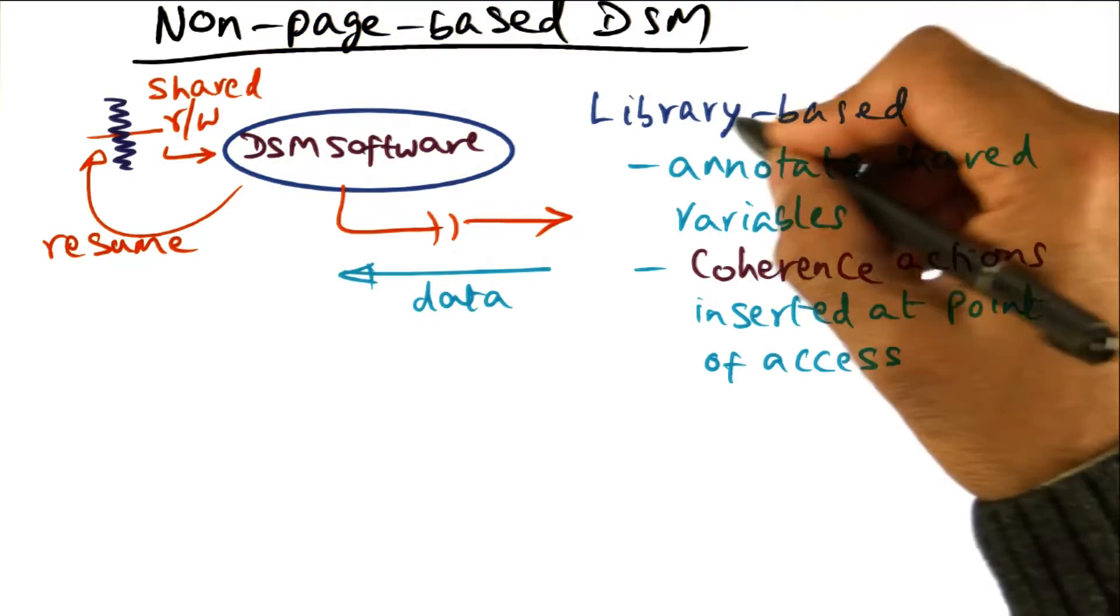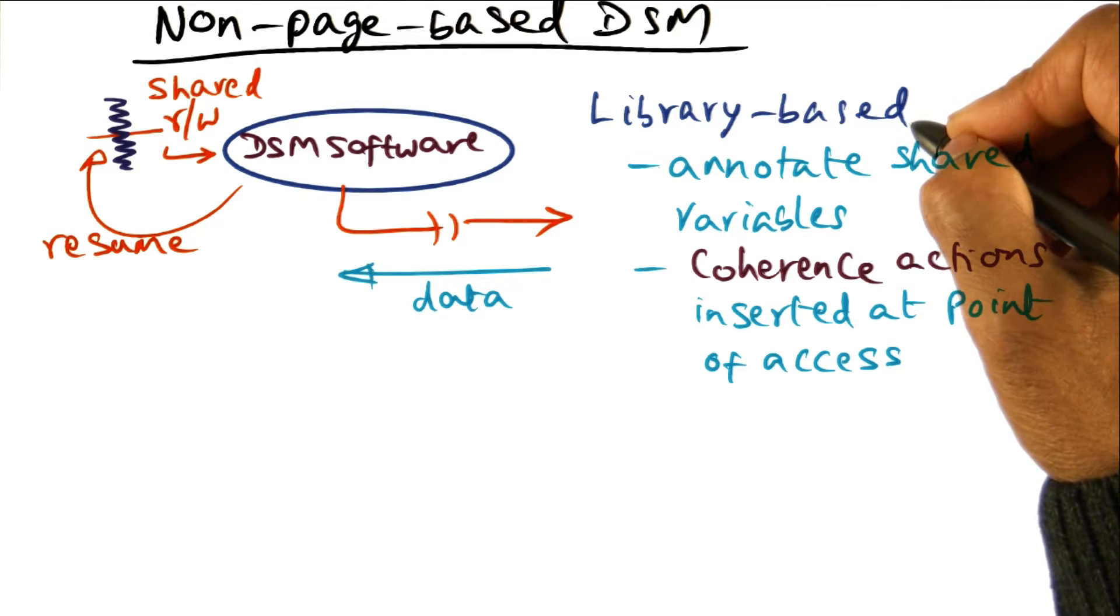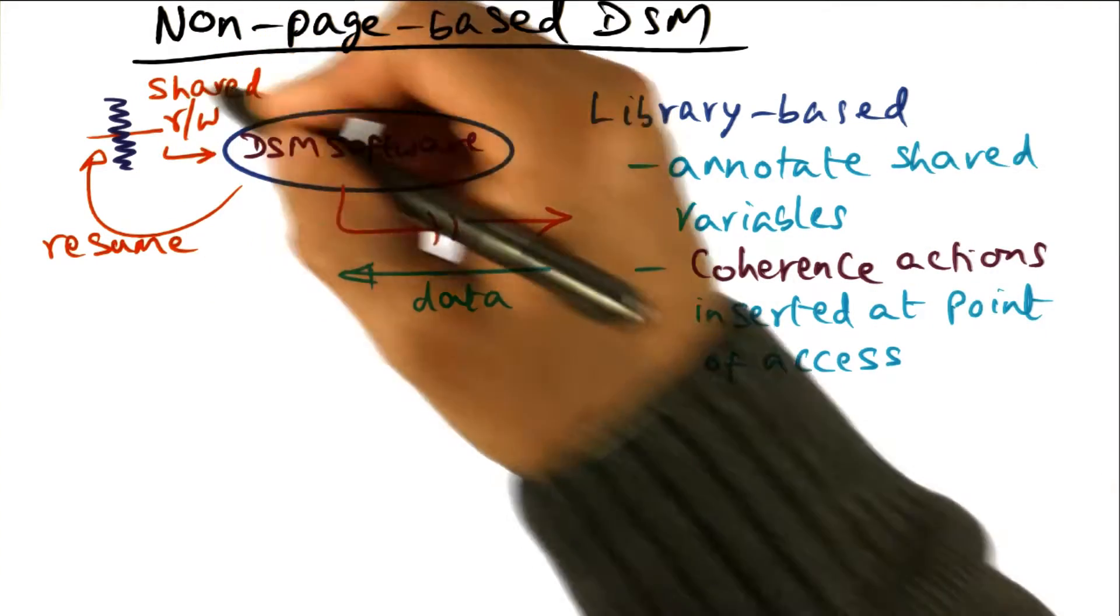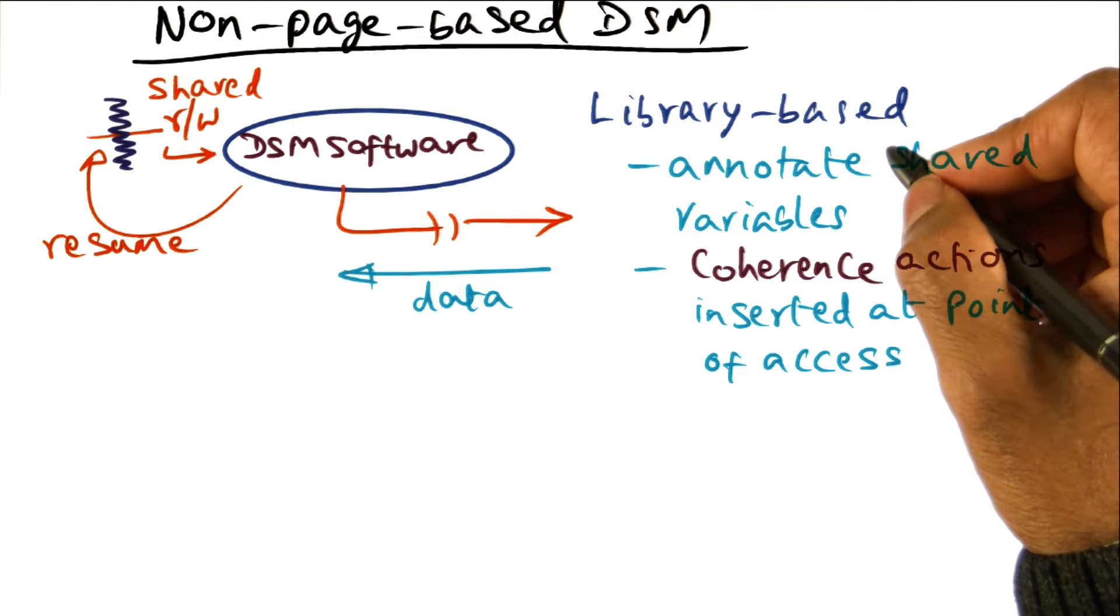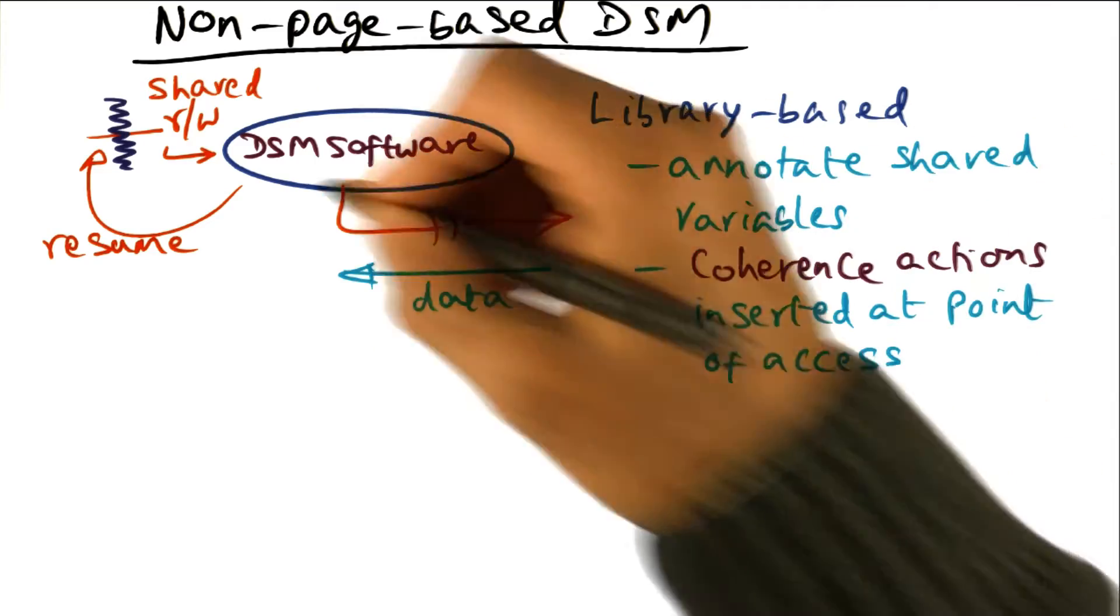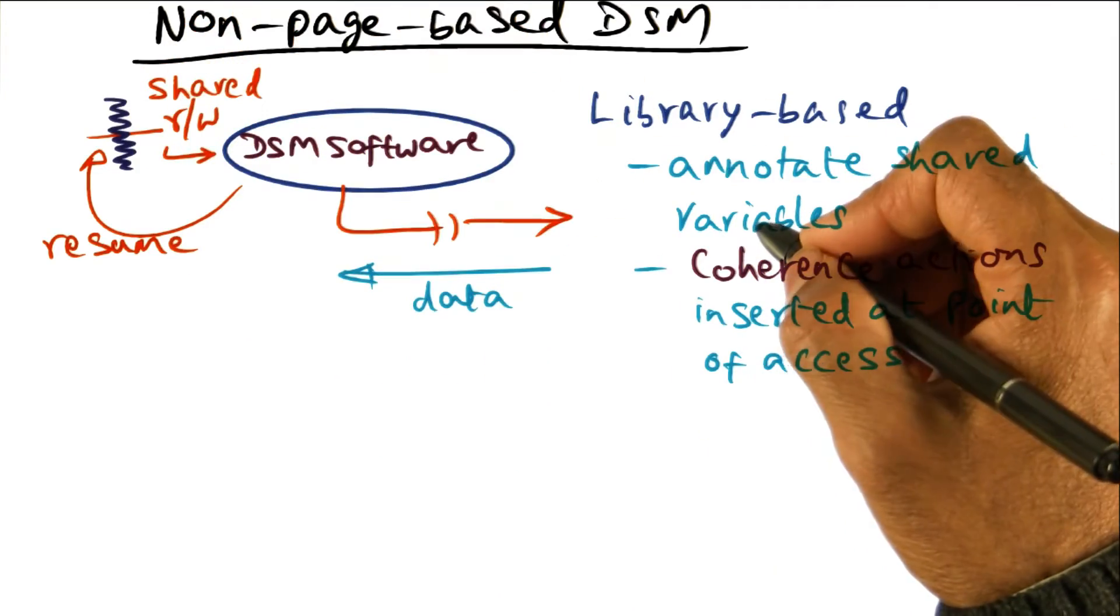So one approach is what is called a library based approach. Here the idea is that the programming framework, the programming library, is going to give you a way by which you can annotate shared variables that you're going to use in your program.